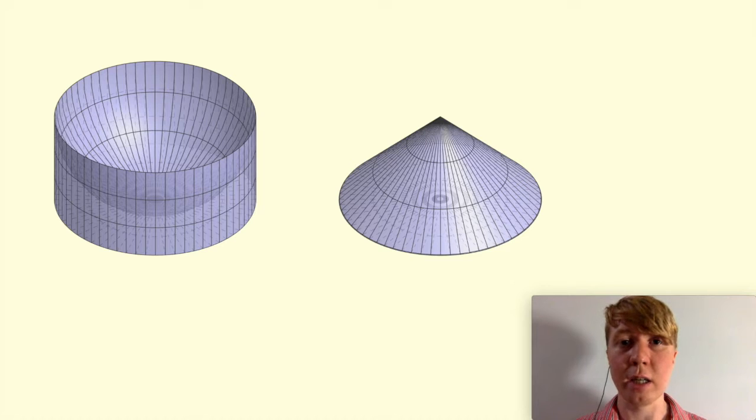And then on the right-hand side, we've got a cone. Both of these shapes have the same height, but not only that, they've also got the same radius for the circular face at the bottom.